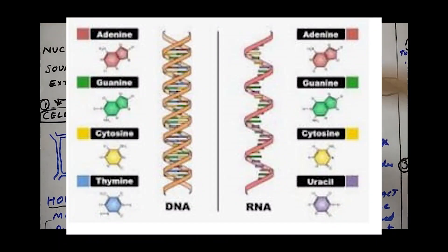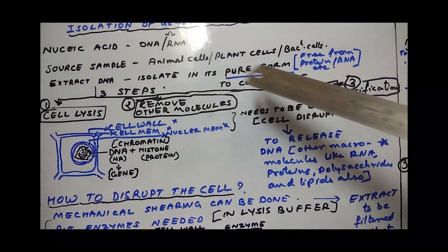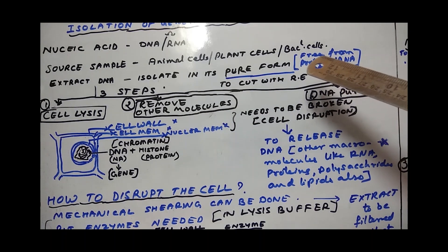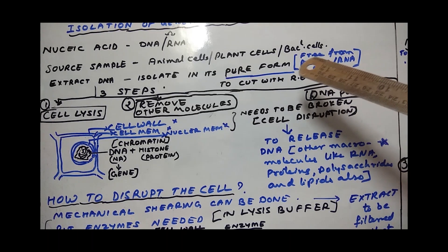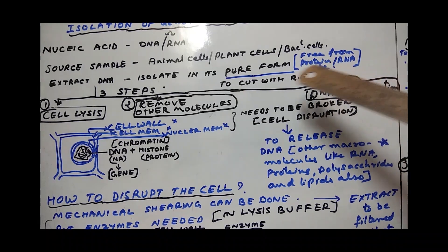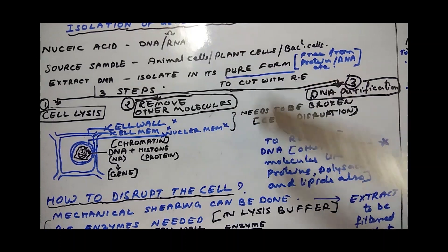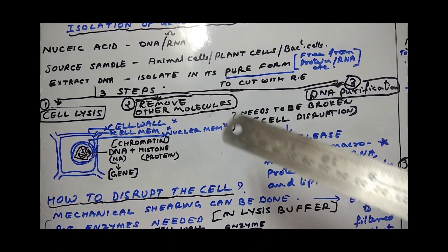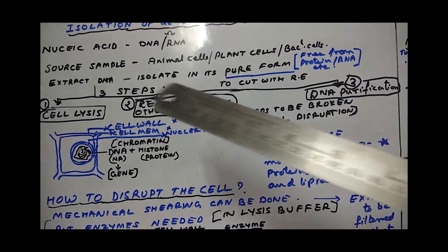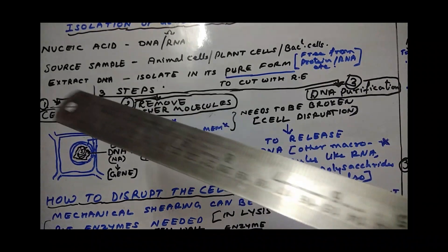What is the genetic material? They are called nucleic acids. So what are the nucleic acids? DNA and RNA. You can take a source sample like animal cells, plant cells, bacterial cells. If you want bacterial cells you have to culture them to get specifically the bacteria you want.